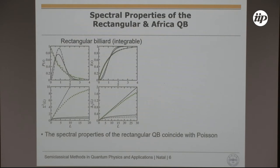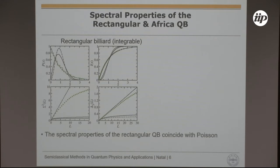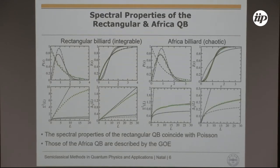For the rectangular billiard you can see that the nearest-neighbor spacing distribution and integrated nearest-neighbor spacing distribution are very close to Poisson. For the number variance and delta-3 you see some deviations depending on the length of the interval. It is very difficult to get perfect Poisson for rectangles — you have to choose irrational ratios and compute around 100,000 levels; here I just used 10,000. For the Africa billiard the spectral properties agree very well with GOE in both short-range and long-range correlations.